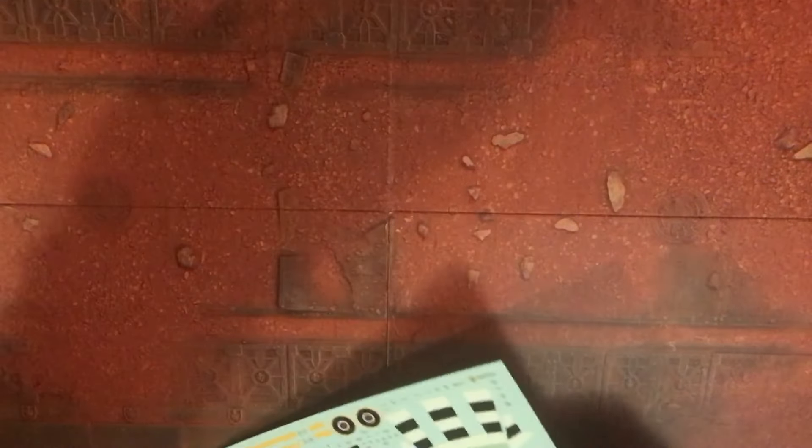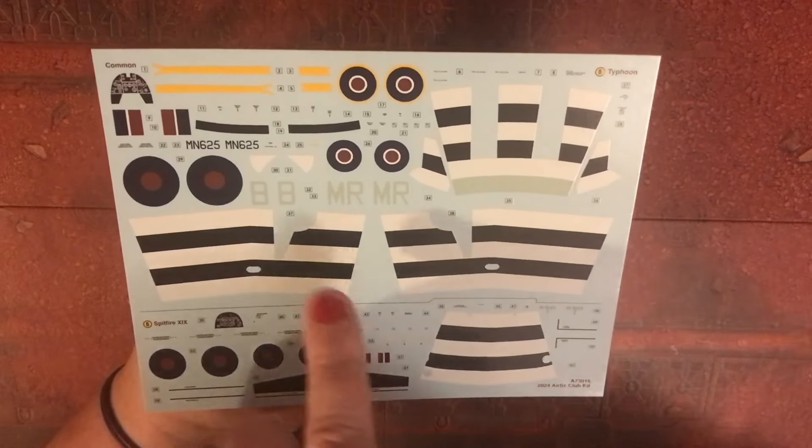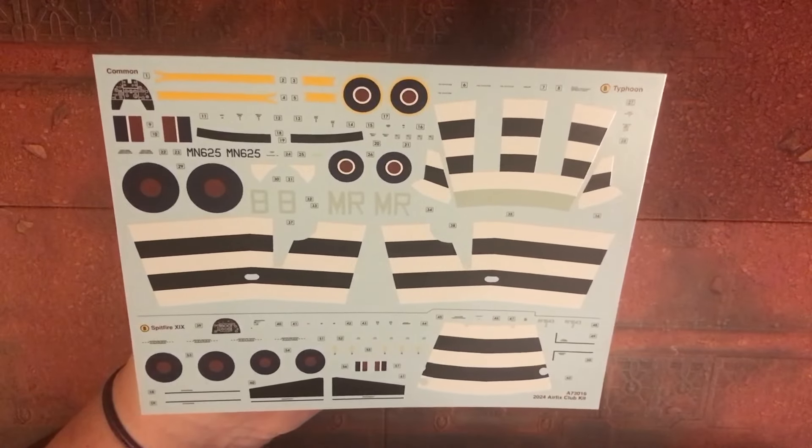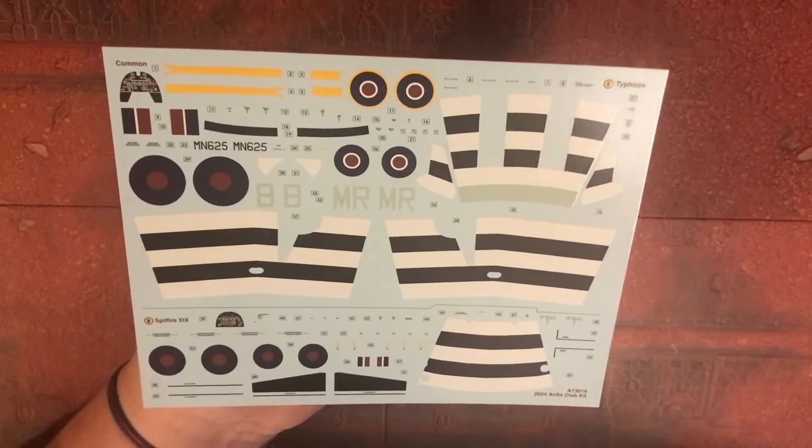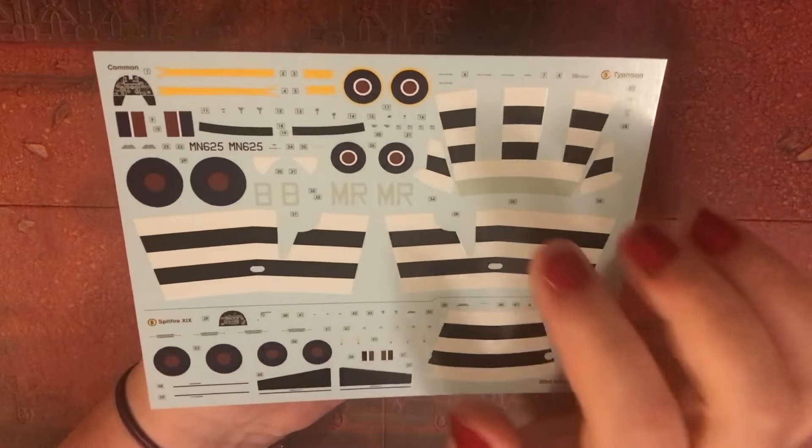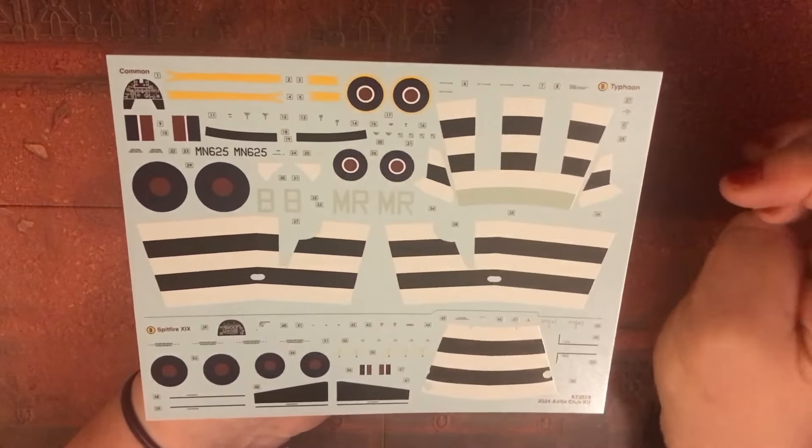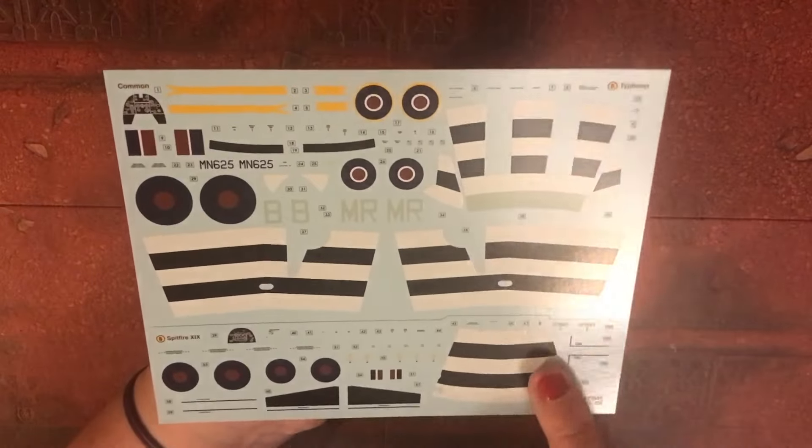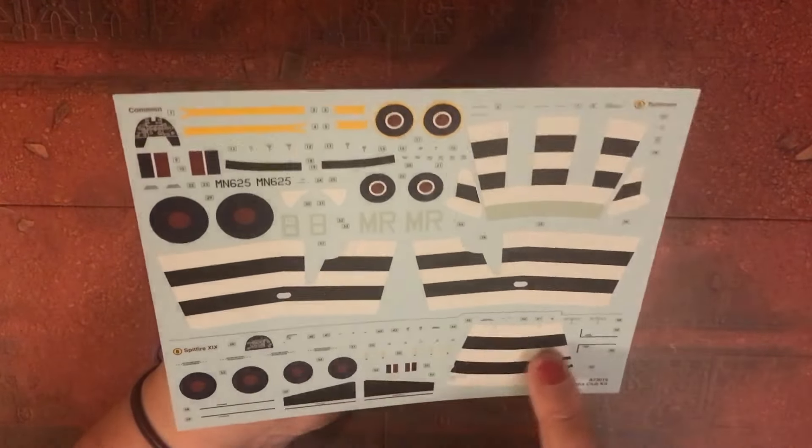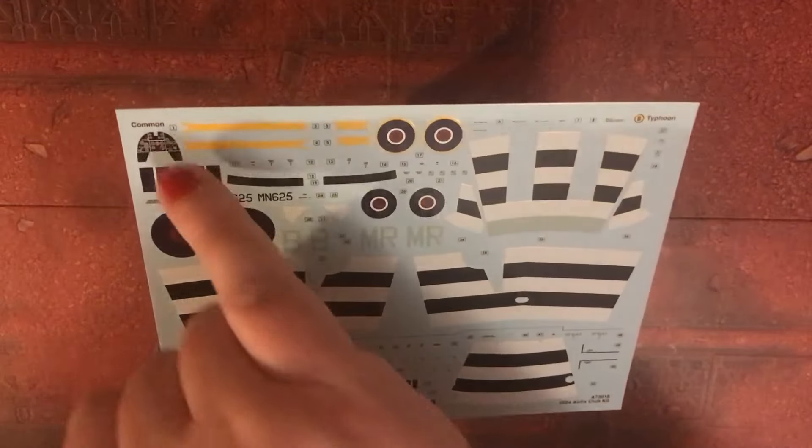So decals, the top ones are for the Typhoon. You've got your decals for your invasion stripes there. You can choose to use the decals if you so wish or if you wish you can mask off and spray. And you've got obviously the invasion stripes here for the Spitfire. This is the Spitfire decal section, this is your Typhoon. Both aircraft have a decal sheet for the control panel.